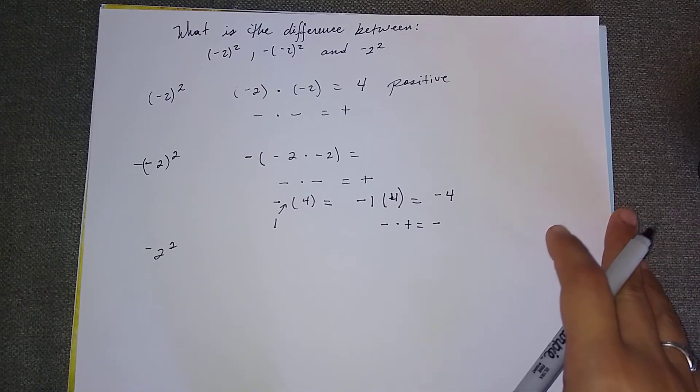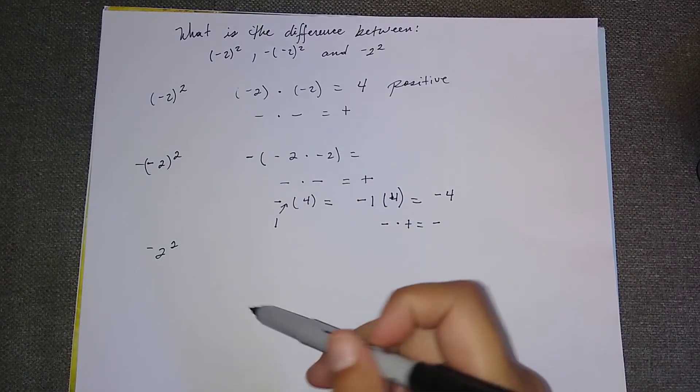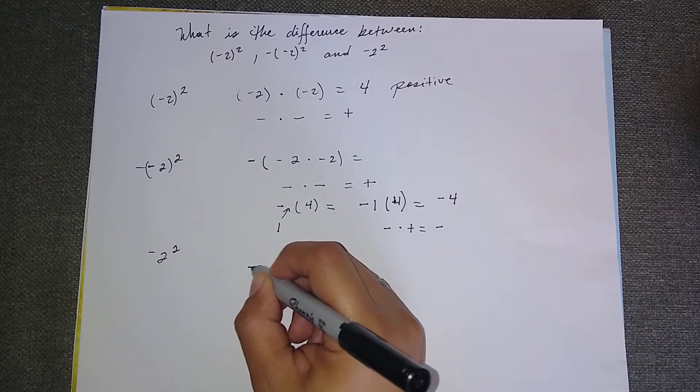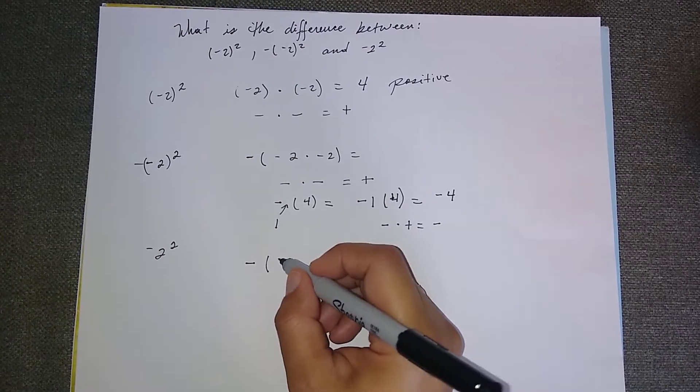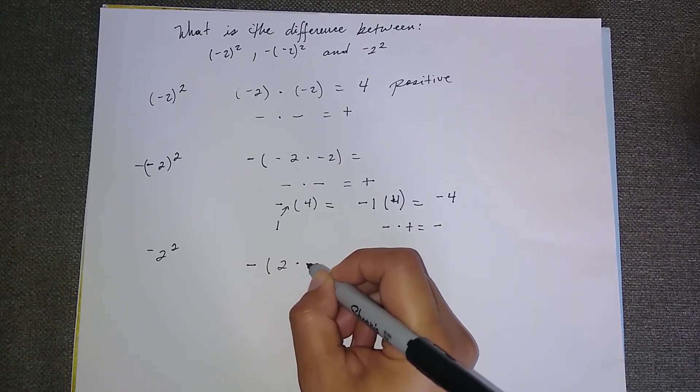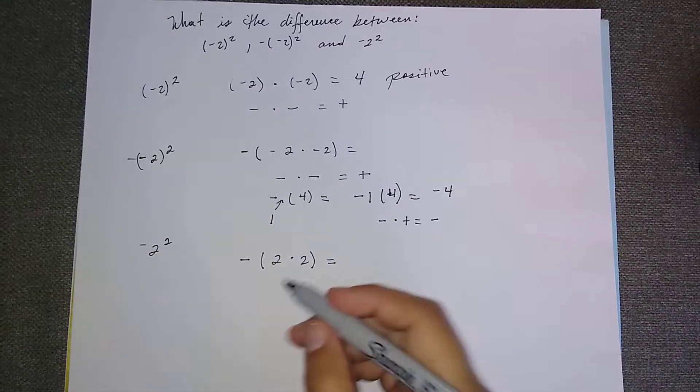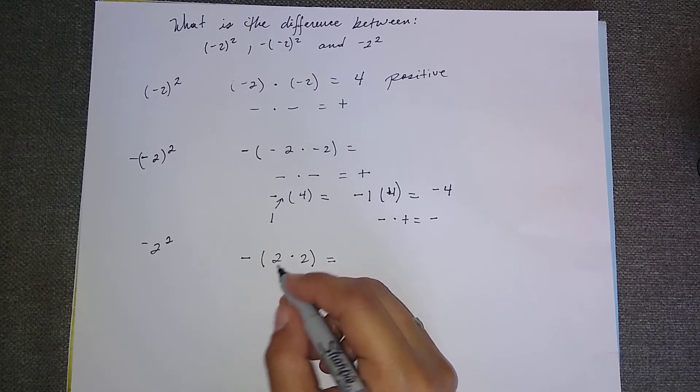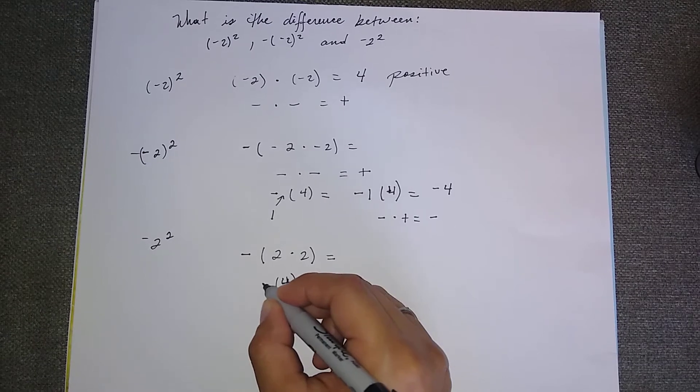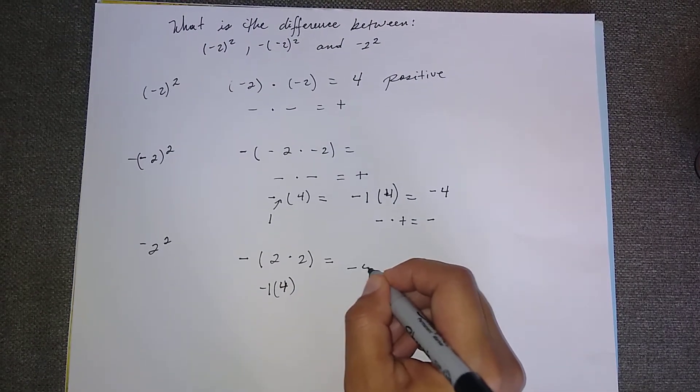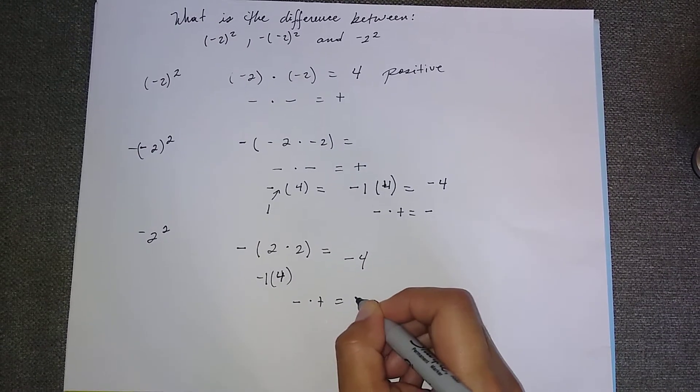And then the next one is negative two square. And that one gets solved having the negative on the outside times the two, positive two, inside the parenthesis. And that will give you two times two times the negative one that's there will also give you a negative four. Why? Because negative times a positive will give you a negative.